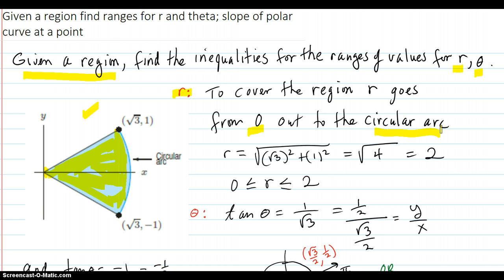So out on the circular arc, the ray is out there to this point, for example, is the square root of three squared plus one squared, which comes out to be four. Square root of four is two.